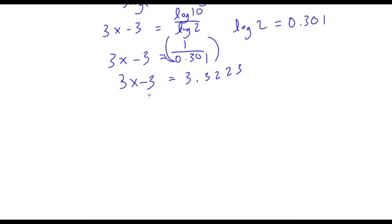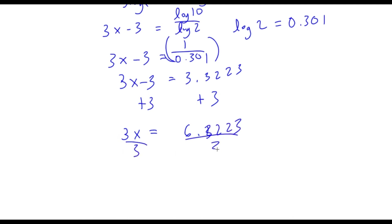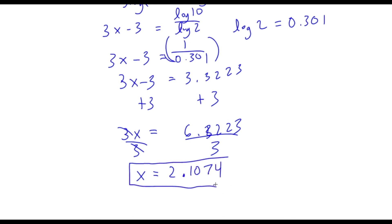So now we have 3x minus 3 is equal to 3.3223. I can simply add 3 on both sides. So now I have 3x is equal to 3 plus 3.3223, which is equal to 6.3223. Now I can divide both sides by 3 to isolate x, so these two cancel out. And I'm left with x is equal to 6.3223 divided by 3, which is equal to approximately 2.1074. So x is equal to 2.1074.